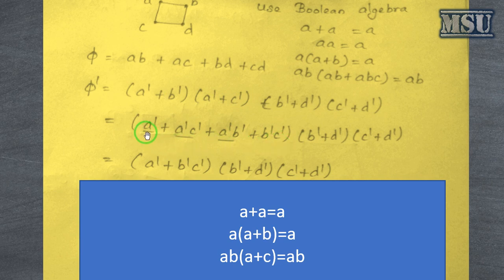Now you consider here we are having the terms a', a'c' and a'b'. So what you can do is, you can use the absorption law, we can rewrite it as a'. This is with respect to the Boolean algebra.